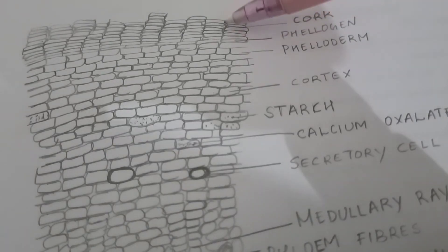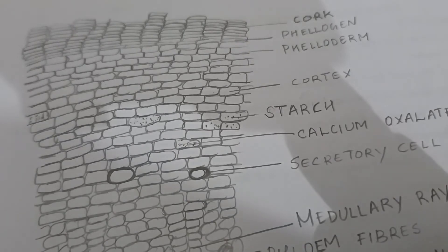First you can see the cells of the cork, several layers of thin-walled flat polygonal cells with reddish-brown content impregnated with suberine.